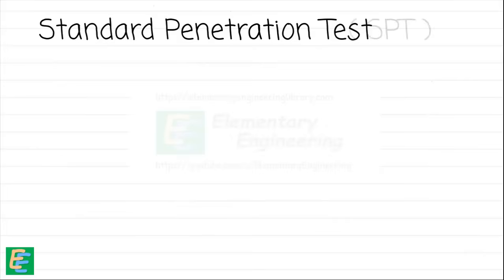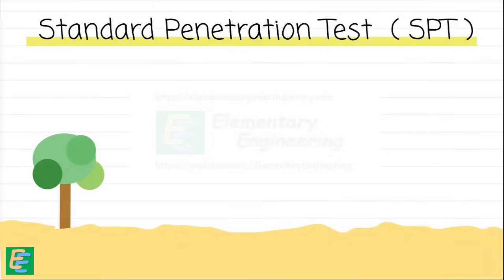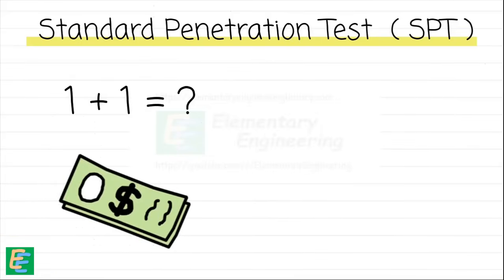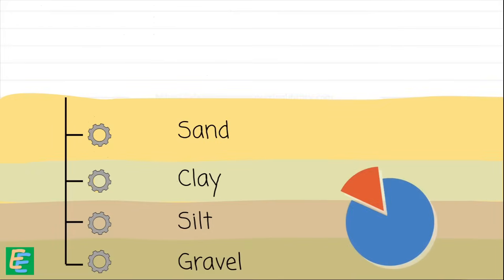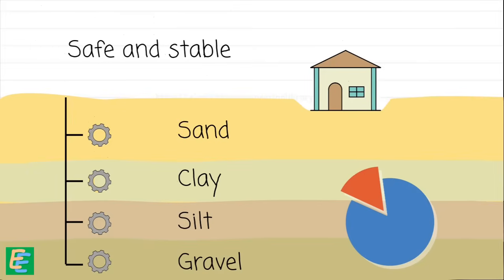The Standard Penetration Test, also called SPT for short, is a field test. In engineering drawings it is often denoted by this symbol. The SPT is a simple and low-cost testing procedure widely used worldwide. The test is primarily used to assess the engineering properties of soil at different depths. It even identifies different soil layers - sand, clay, silt, gravel, etc. - that lie beneath the surface. Data from this test allows engineers to estimate how much the soil will settle under a given load, helping ensure that the structure remains safe and stable.